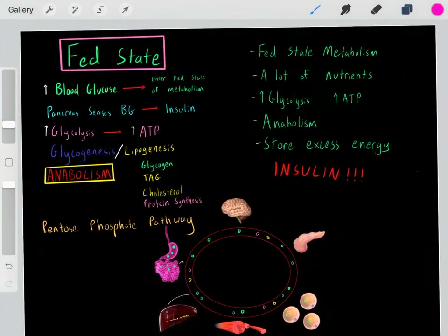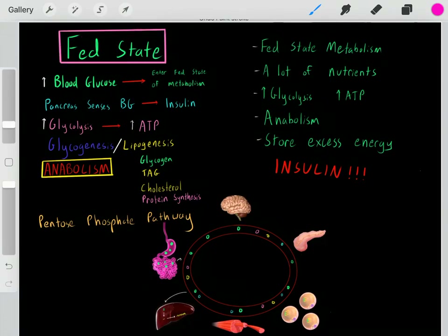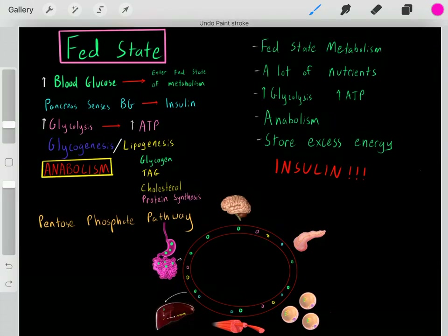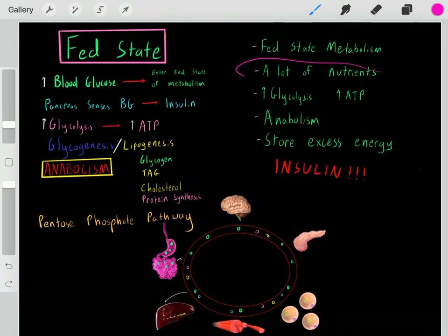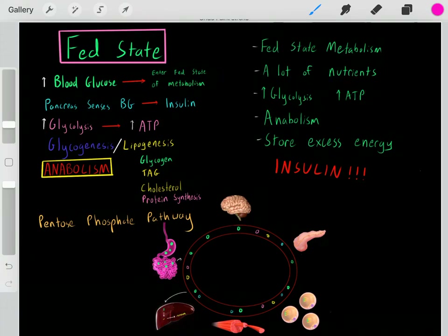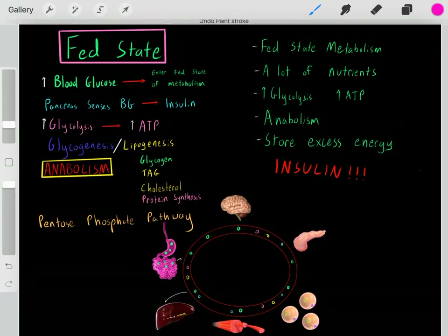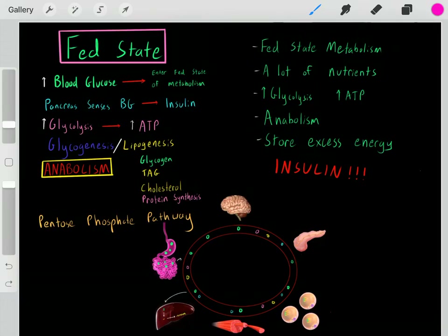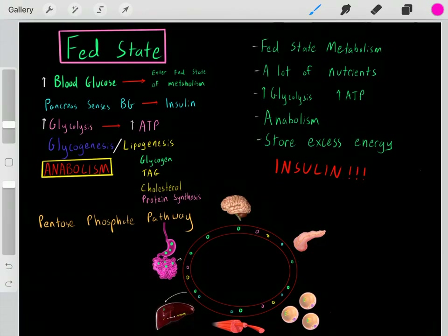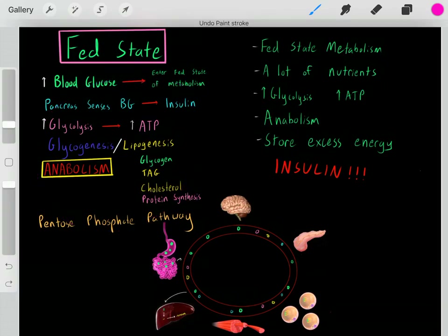There are two states of metabolism: the fed state and the fasted state. In the next video we'll talk about the fasted state — I have a link below. During the fed state, we've just eaten a meal so we have a lot of excess nutrients in our bloodstream. We can oxidize those nutrients through glycolysis and other pathways to create ATP. Now that we've created a lot of ATP, this is the perfect opportunity to go through anabolism and create all the larger biomolecules we need for life, and also to store the excess energy from those nutrients. Again, how do our cells and organs know to go through the fed state? It's that insulin — insulin essentially upregulates and activates all these processes related to the fed state.